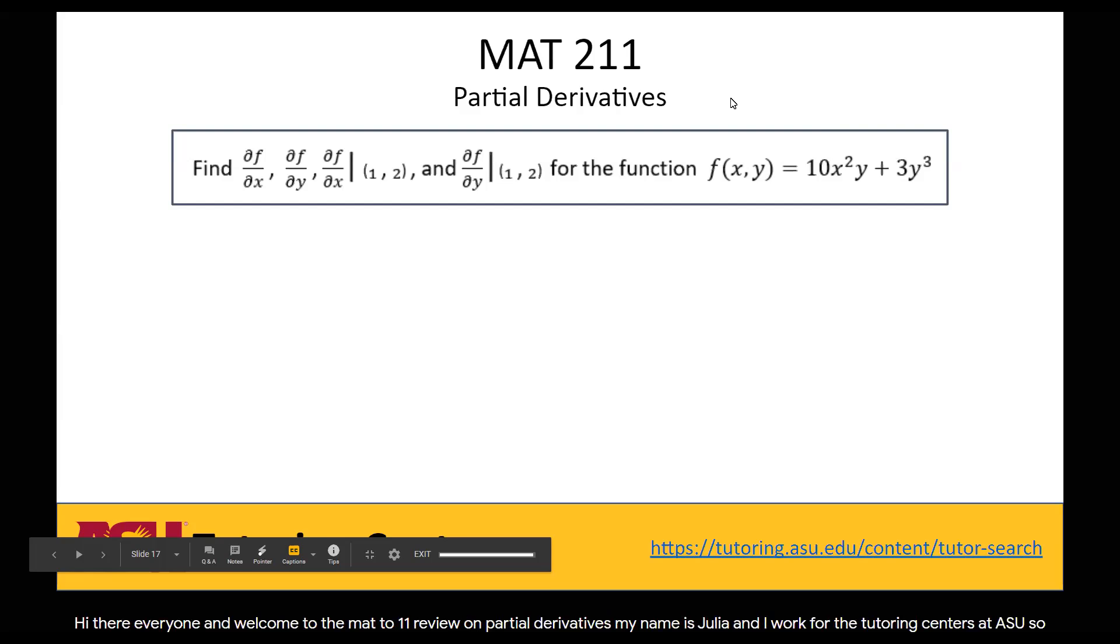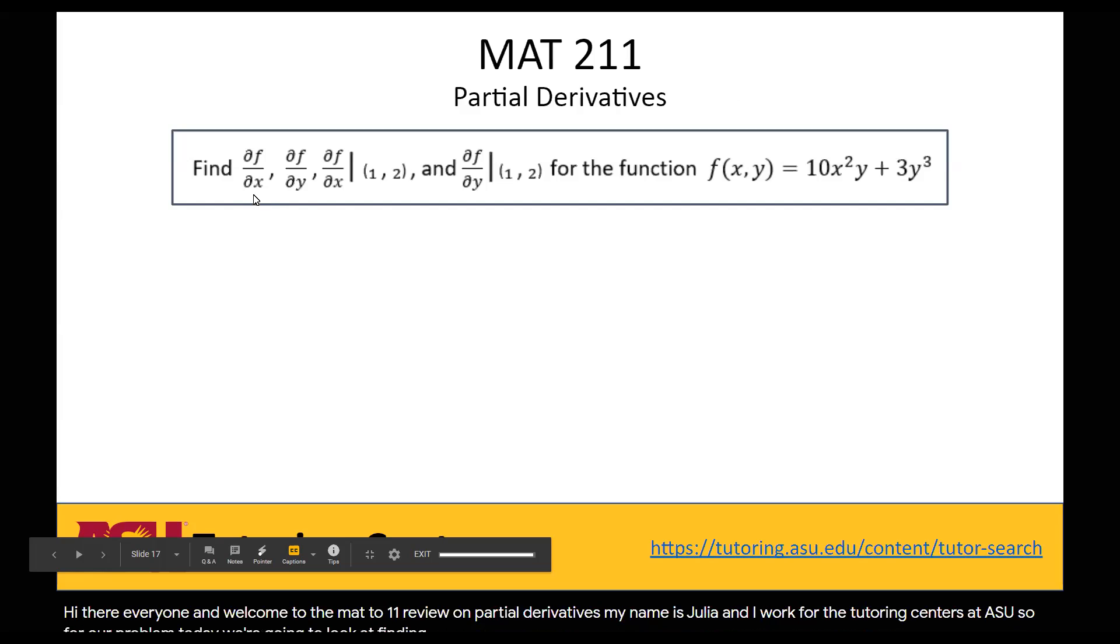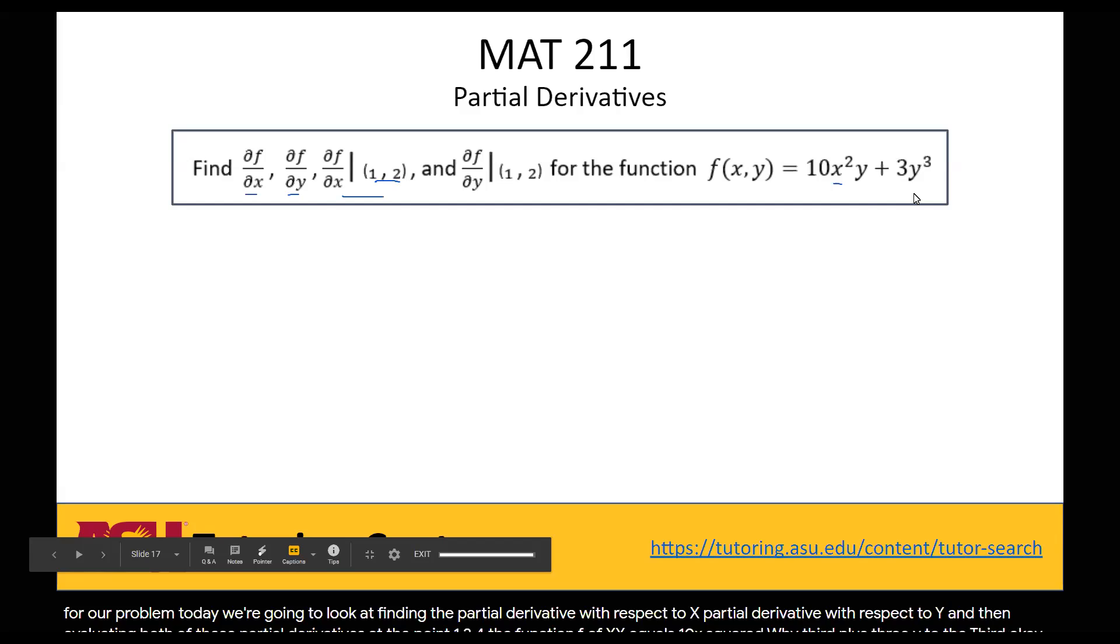So for our problem today, we're going to look at finding the partial derivative with respect to x, the partial derivative with respect to y, and then evaluating both of these partial derivatives at the point (1,2) for the function f(x,y) equals 10x squared times y plus 3y to the third. Okay, so let's get started.